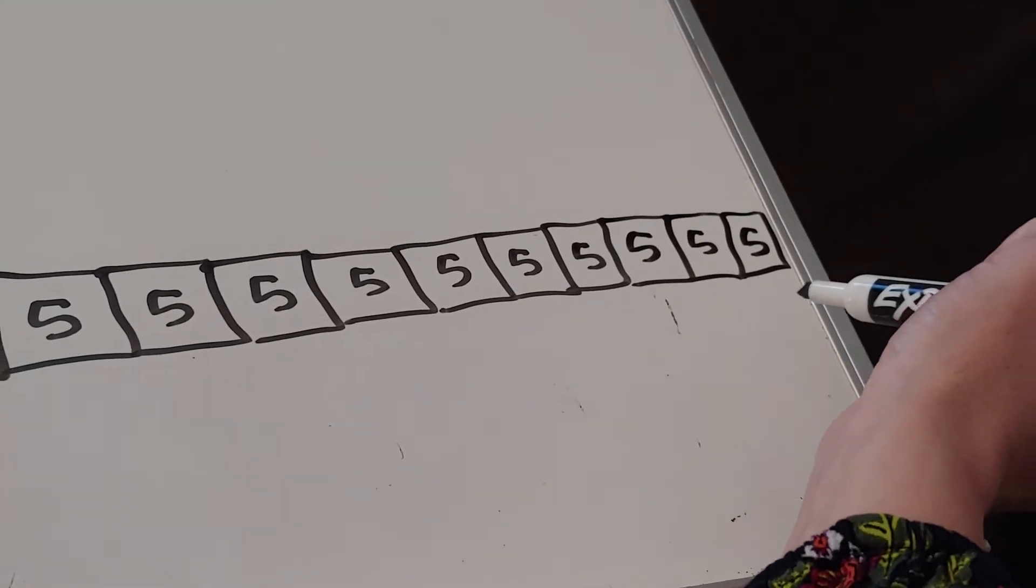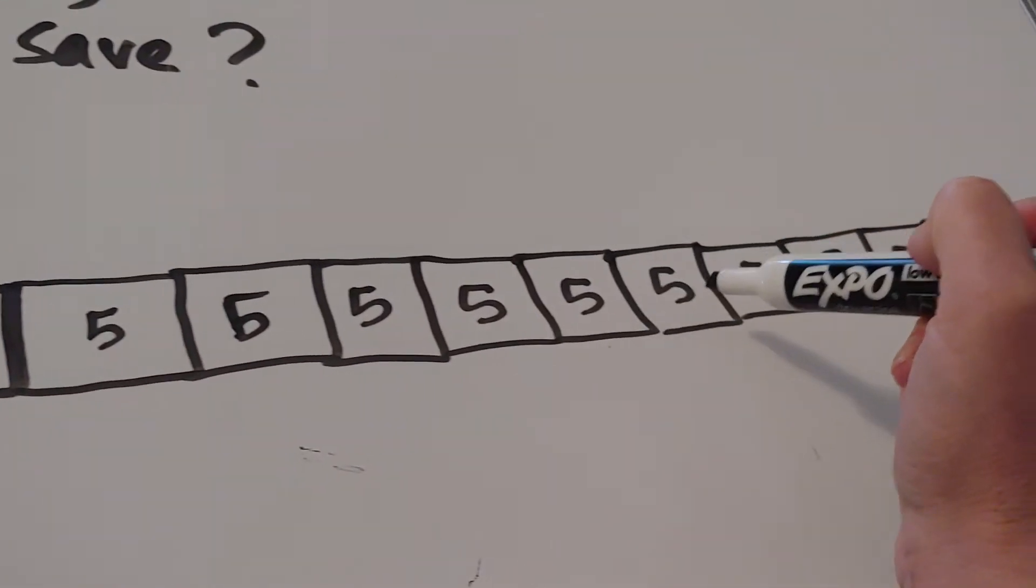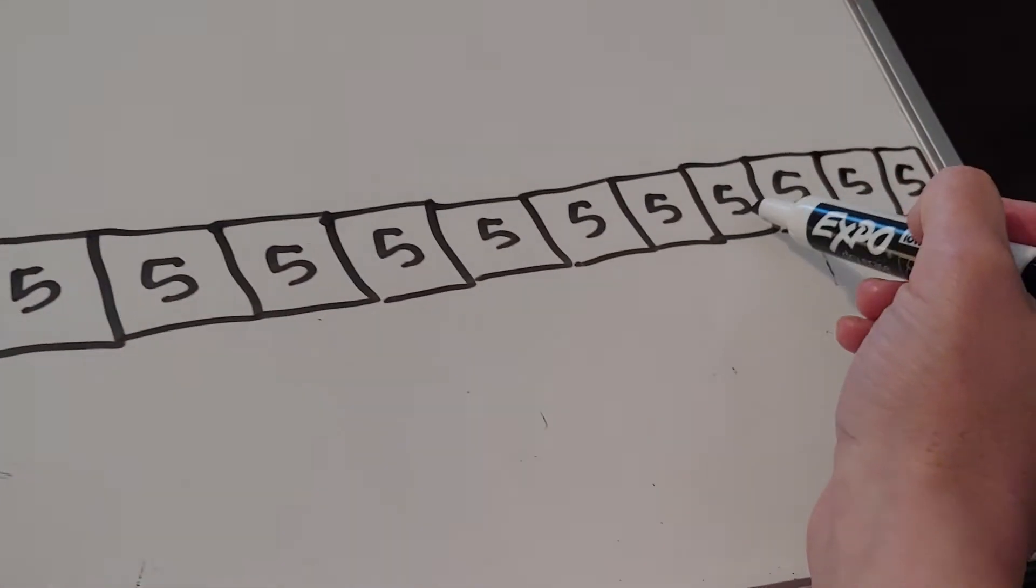So let's count how many I have. I have one, two, three, four, five, six, seven, eight, nine, ten, eleven, twelve, thirteen, fourteen boxes.